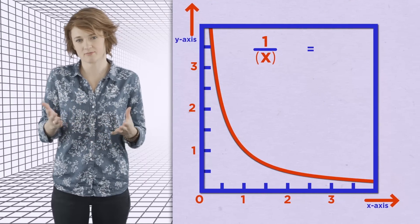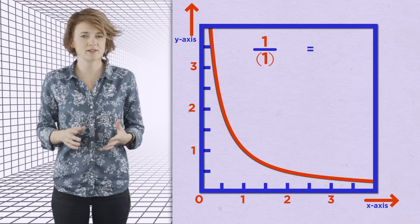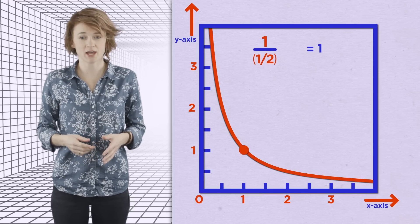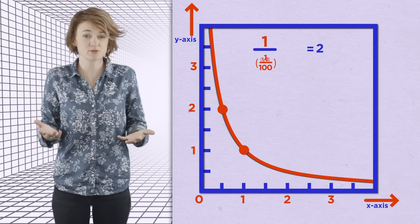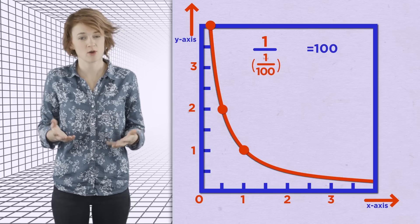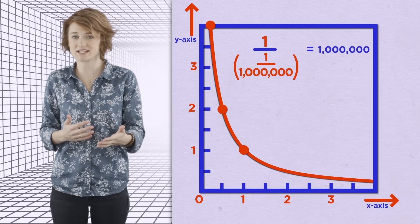Let's look at the function 1 divided by x. When x equals 1, it's 1. When x equals 1 half, it's 2. When x equals 1 over 100, it's 100. When x equals 1 over a million, it's a million.